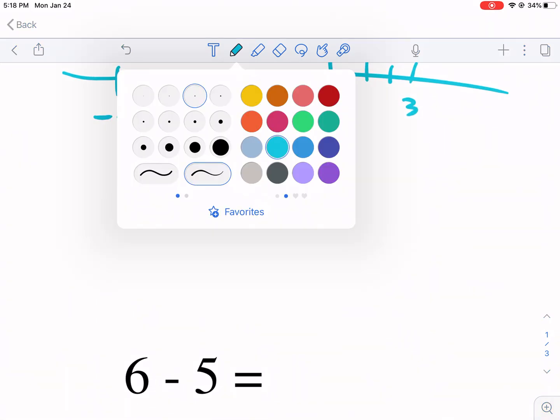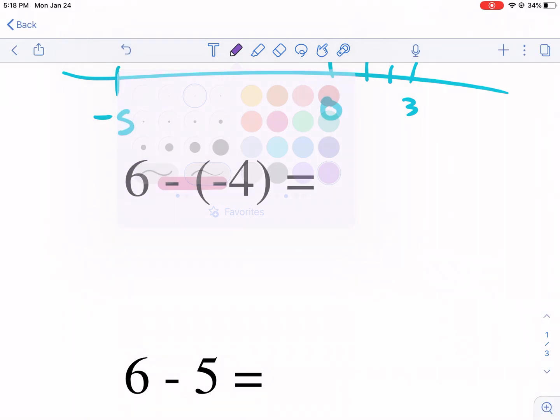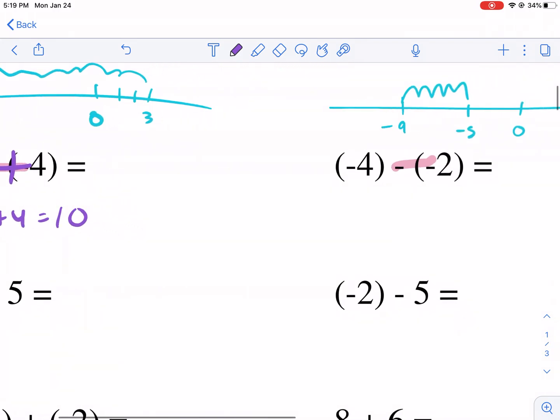We have minus, minus. I highlighted this as like a watch out. We're going to change this to plus. We have six plus four. We know that that's just 10. That's something we've been doing for a while.